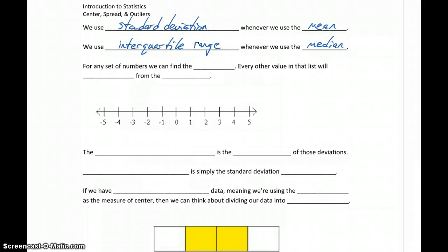So let's talk first about what standard deviation is. For any set of numbers, any data set, we can find the mean of that data. So that's our center, meaning that every other value in that list is going to deviate from the mean by some amount.